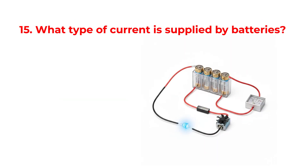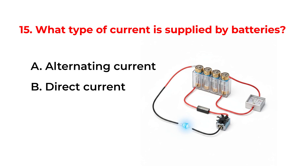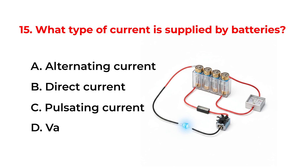What type of current is supplied by batteries? A. Alternating current. B. Direct current. C. Pulsating current. D. Varying current.